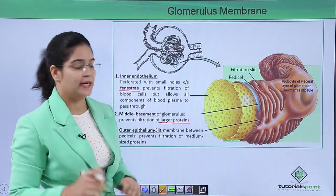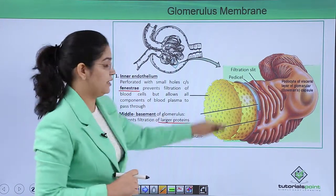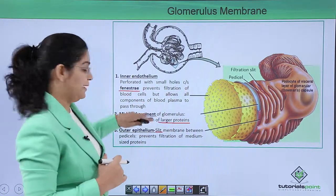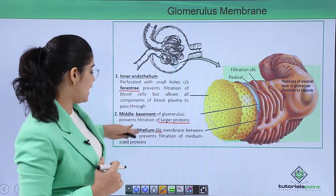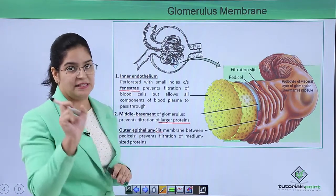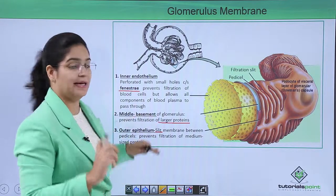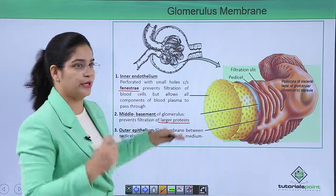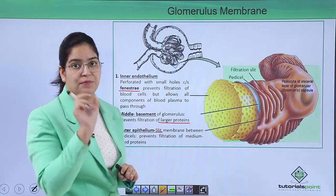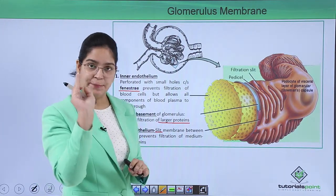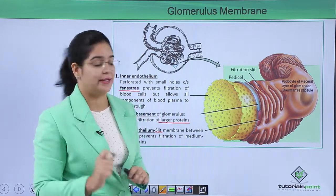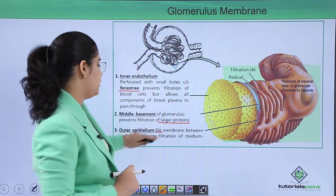So three layers are present in the glomerulus: the inner endothelium containing fenestrations, the middle basement membrane preventing larger proteins from entering, and the outer epithelium with foot-like structures and slit membranes that prevent medium-sized proteins from entering.